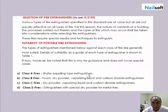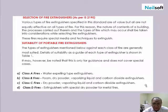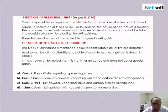To summarize the extinguisher types by fire class: Class B fires use foam, dry powder, or vaporizing liquid extinguishers. Class C fires use dry powder, carbon dioxide, or vaporizing liquids. These will be discussed and explained further as needed. This concludes Part 3 of our training.